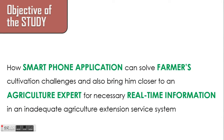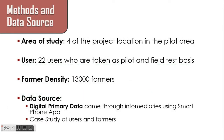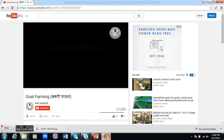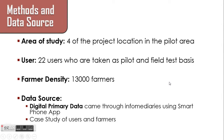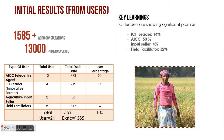The objective of the study was to determine how a smartphone application can solve farmers' problems through an agriculture expert sitting remotely by giving real-time information to farmers. In our study, we looked at four project locations with 22 users who used the farmer query mobile application. The density of farmers covered was 13,000, and the data source was primary data coming through the mobile application queries. We also conducted case studies to understand the satisfaction level of farmers and extension agents.